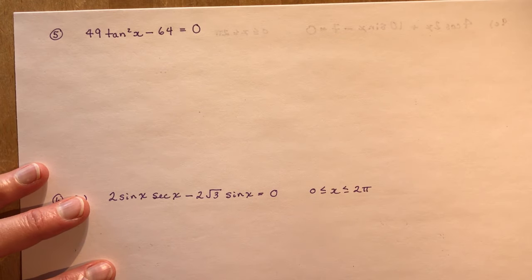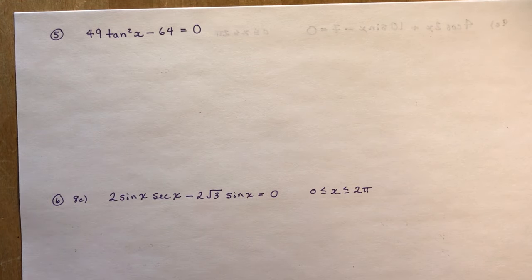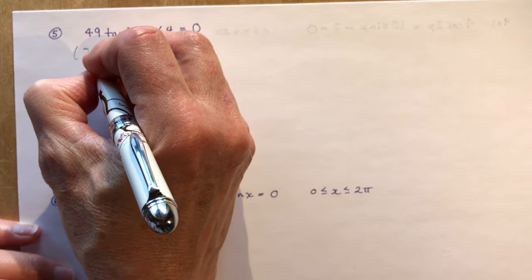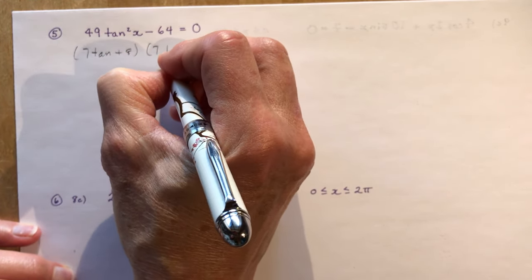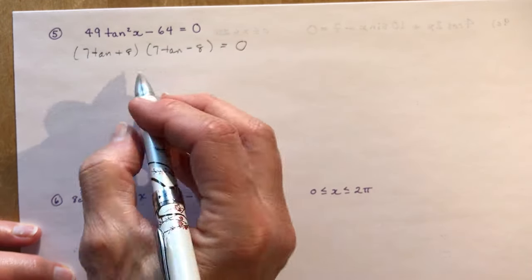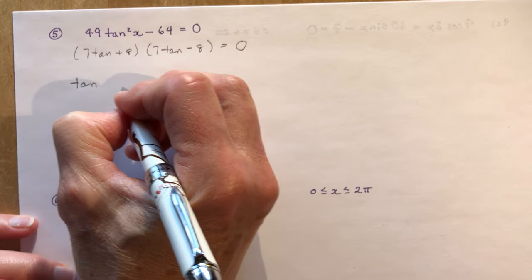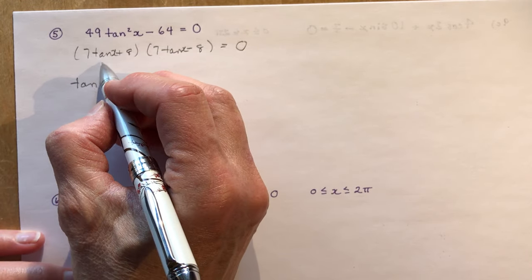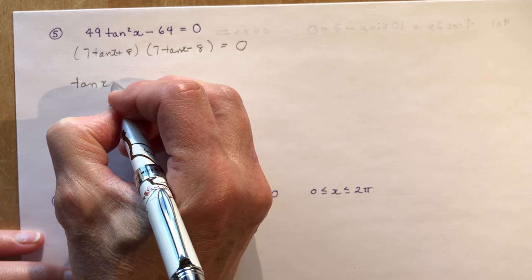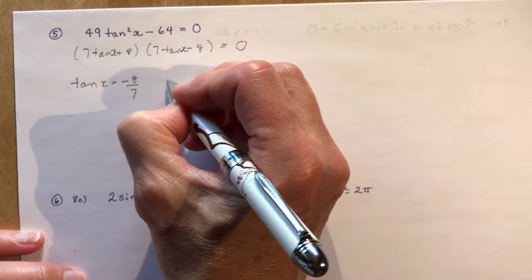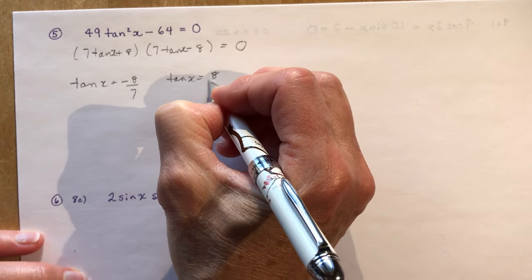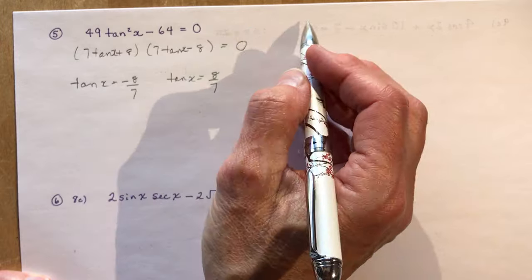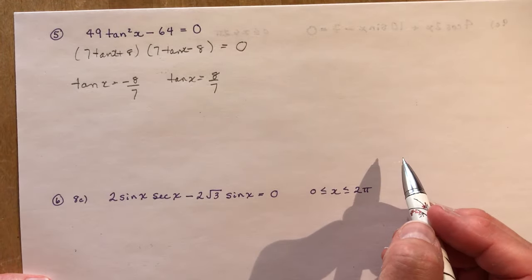Number 5: 49 tan squared x minus 64. You should recognize this as a difference of squares, giving (7 tan x + 8)(7 tan x - 8) equals 0. That gives two equations: tan x equals minus 8 over 7, and tan x equals 8 over 7. No domain was given for this one — you can check your textbook. Use your calculator to find the solutions.